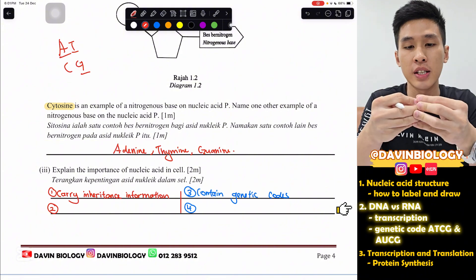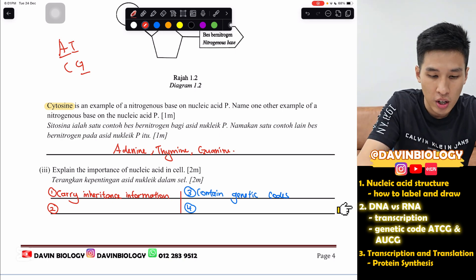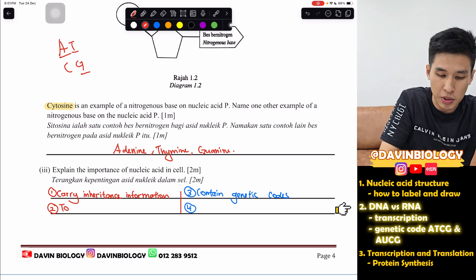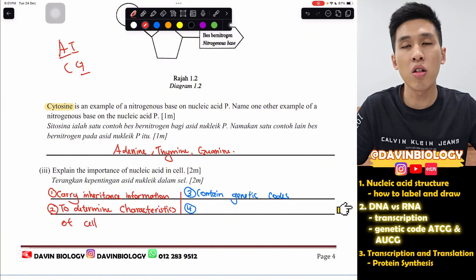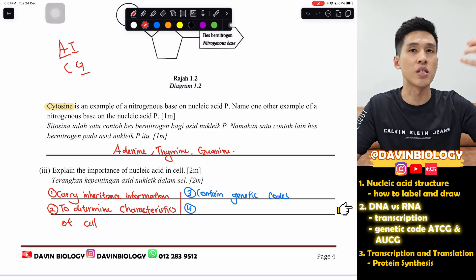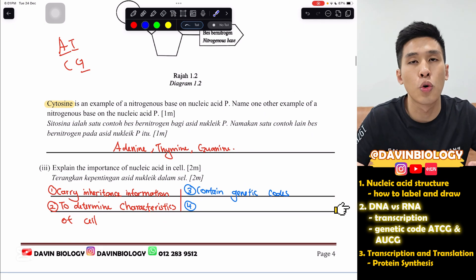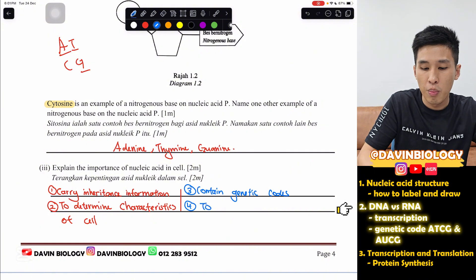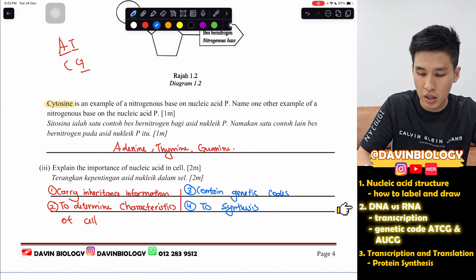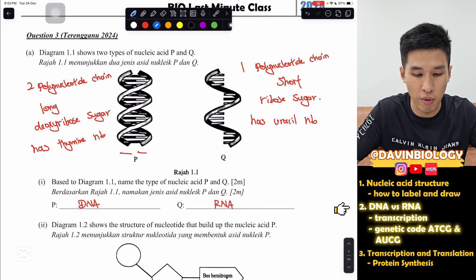Next one, they ask a general question about DNA again. Explain the importance of nucleic acid in a cell. Nucleic acid basically is the DNA. DNA basically has genetic information. It carries inheritance information. It carries genetic information of the cell. What's the importance of the genetic information? It's basically to determine characteristics. Just write the characteristics of a cell, of a living organism. Because all of us, we have different characteristics. Some of us have hair is curly. Some is straight. Some is black. Some is brown. Because all of us have different genetic information. Different DNA.